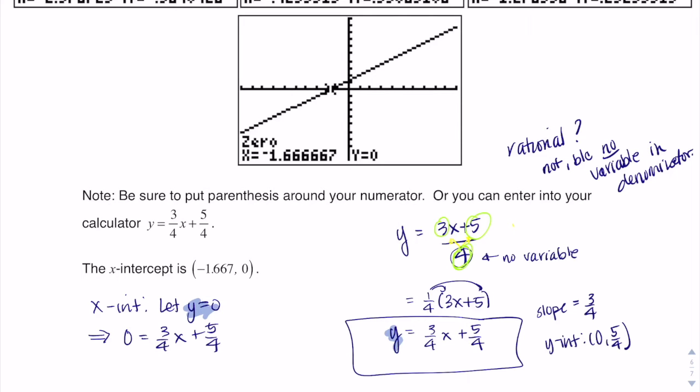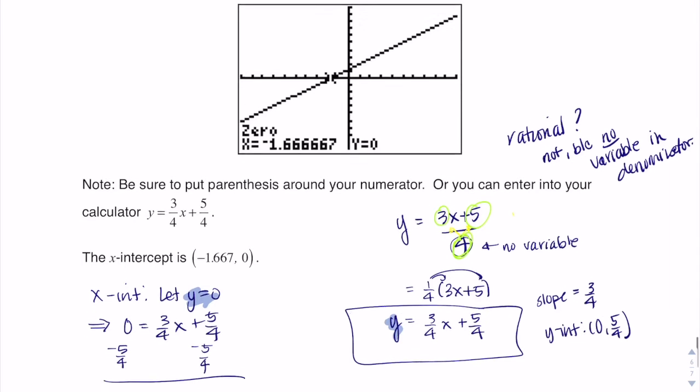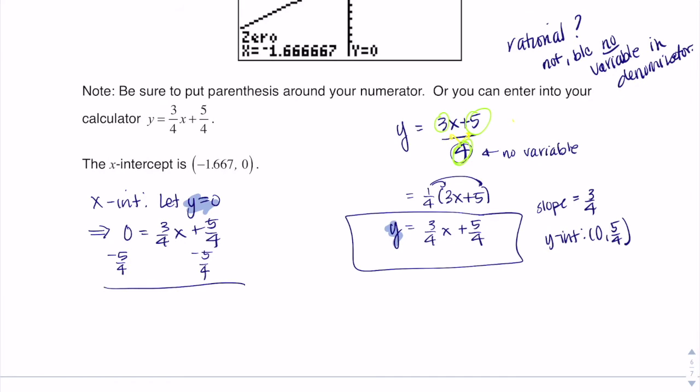All right, I would subtract 5/4 from both sides. Now, for me personally, I prefer when my variable is on the left side, so I'm going to write it this way, that 3/4 x is equal to negative 5/4. And yes, those are ugly, but all I ultimately need to do is divide by 3/4 on both sides to get my answer.